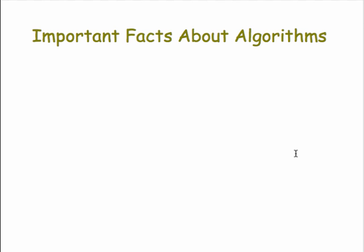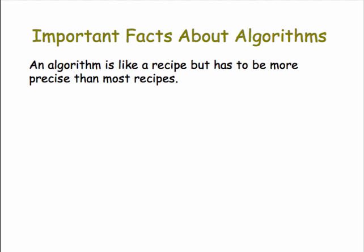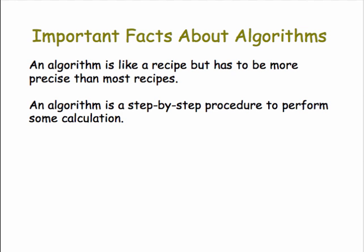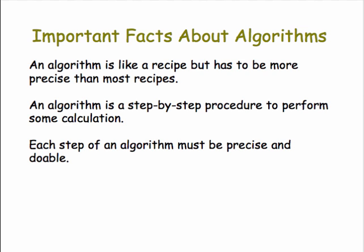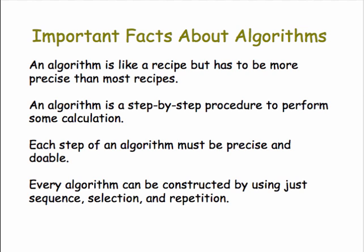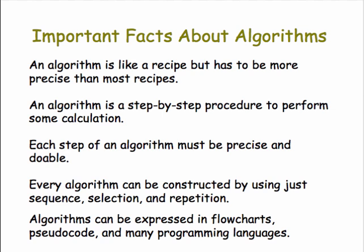So, to sum up, let's review some of the important facts we've discovered about algorithms. First, an algorithm is like a recipe, but has to be much more precise than most recipes. An algorithm is a step-by-step procedure to perform some calculation, each step of which must be precise and doable. And every algorithm can be constructed by using just sequence, selection, and repetition. And finally, algorithms can be expressed in flowcharts, pseudocode, and in many programming languages, including, of course, App Inventor.